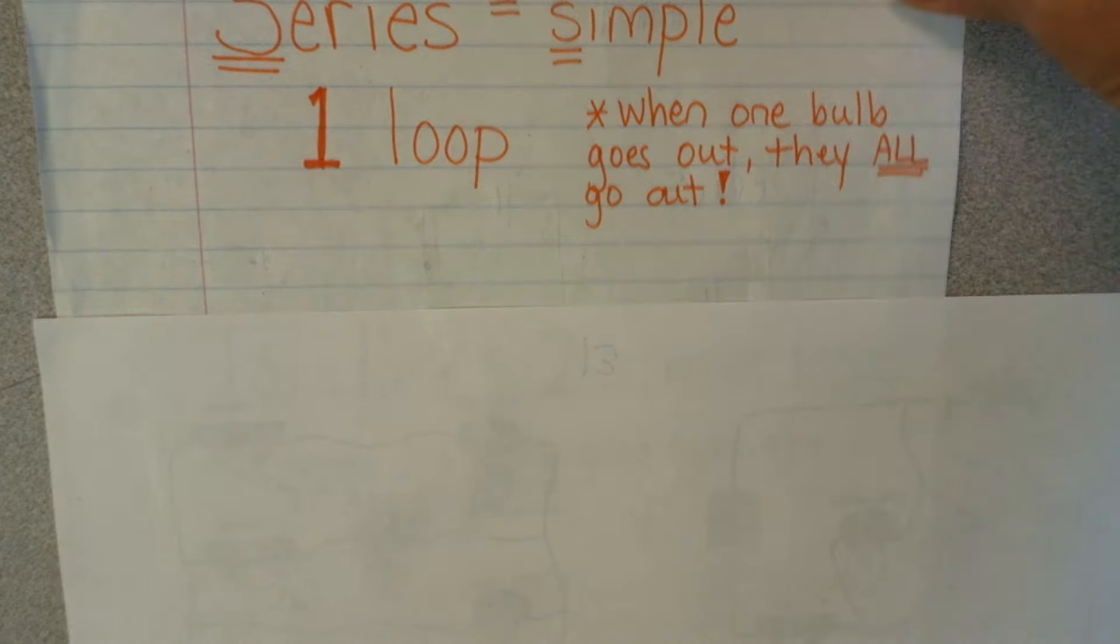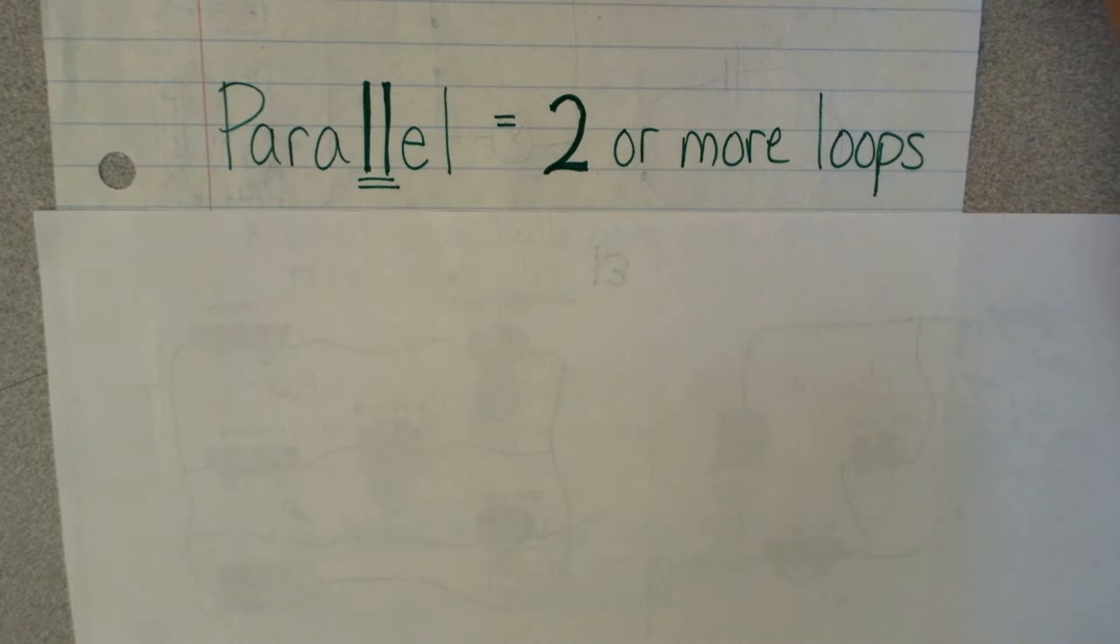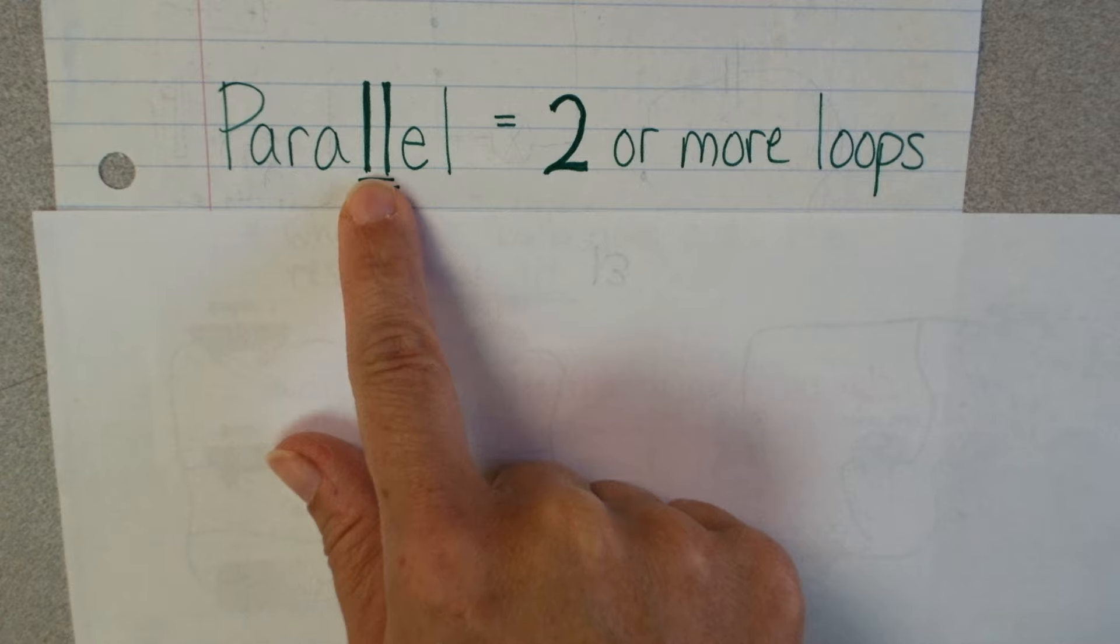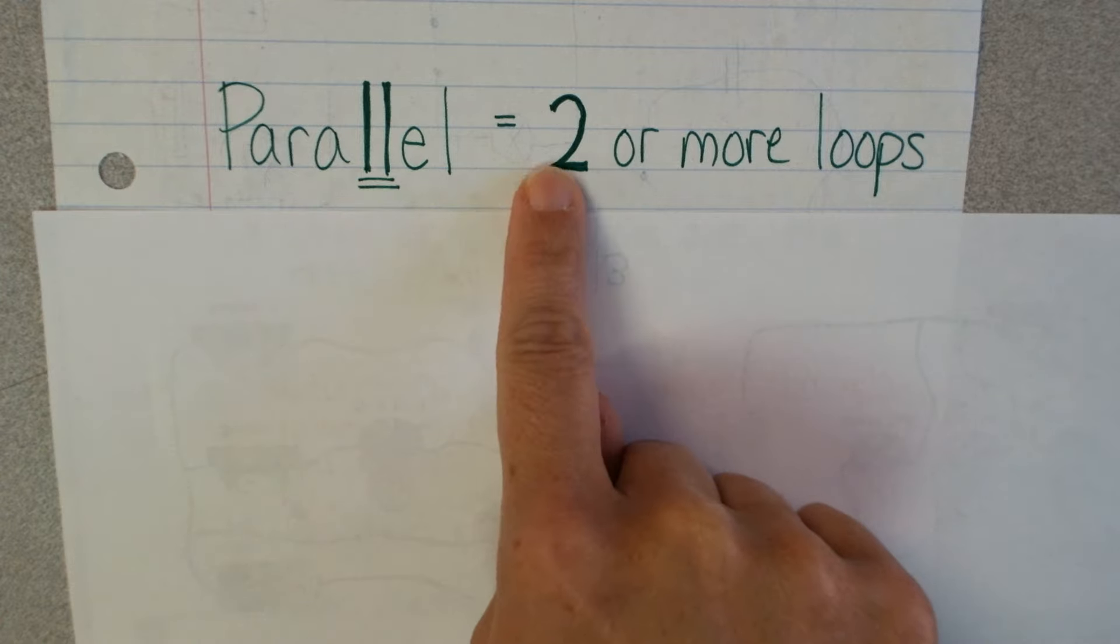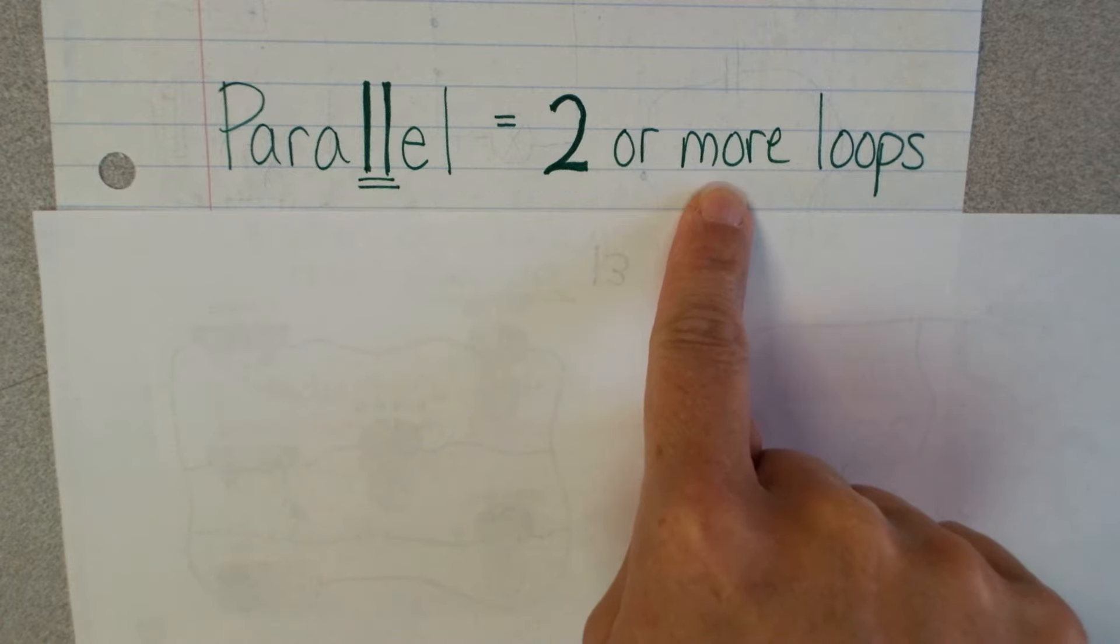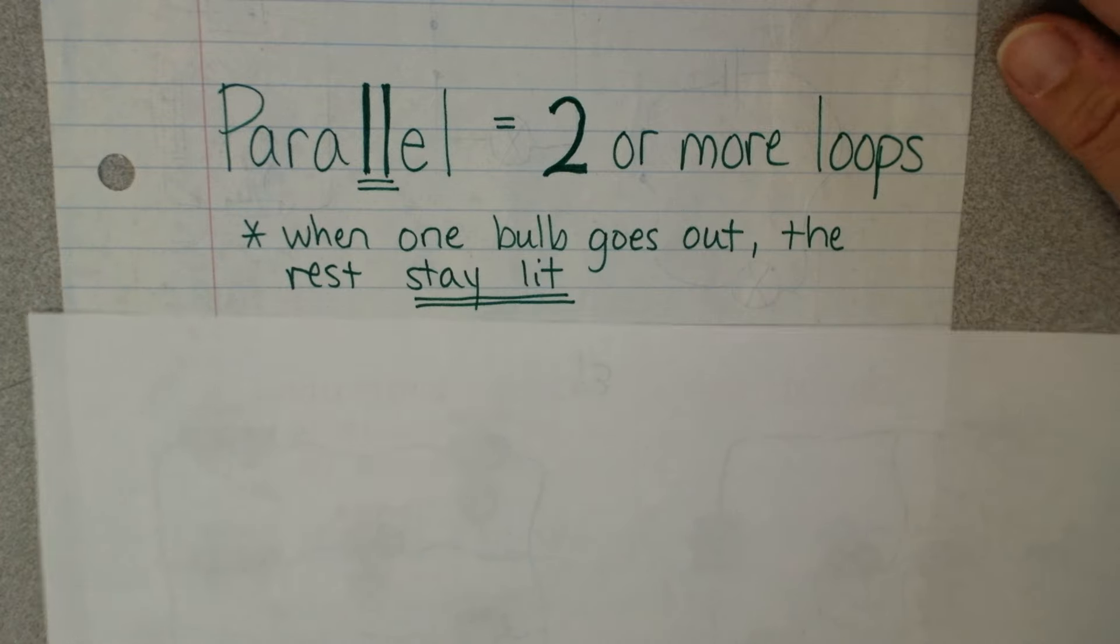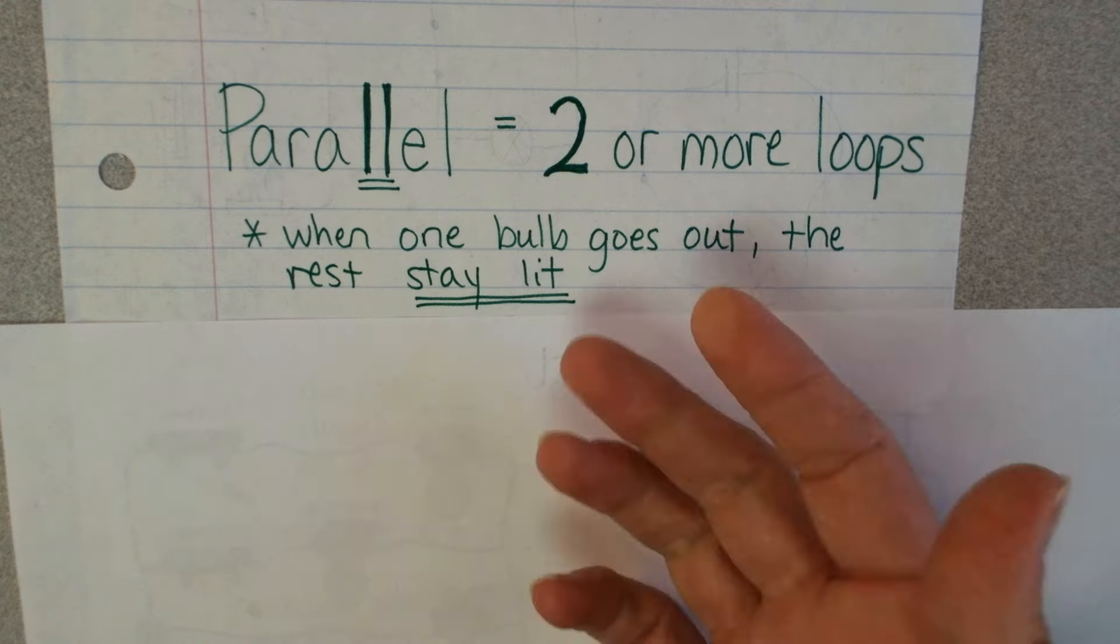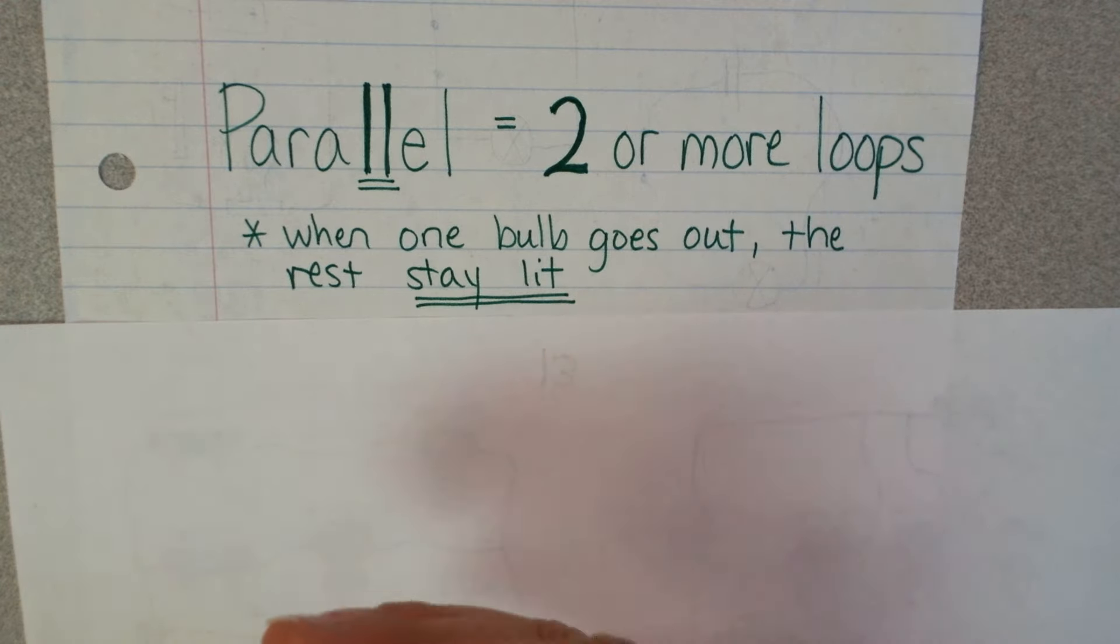So the other way to remember the other type of circuit, parallel, you see the two L's in parallel. So I want you to always remember those two L's are reminding you two or more loops of electricity. Now the good thing about that is when one of those bulbs goes out, the rest are going to stay lit. That's how houses are wired.